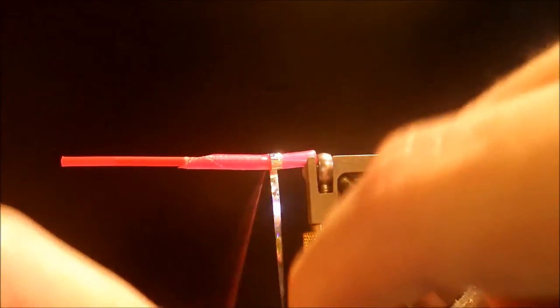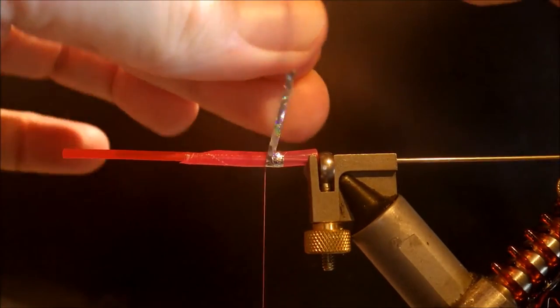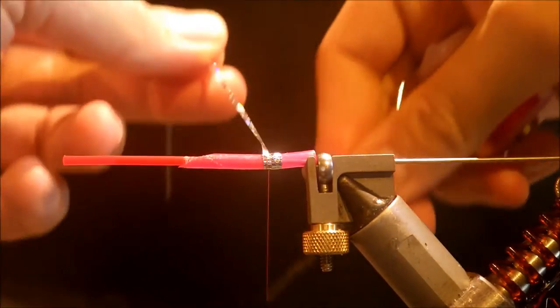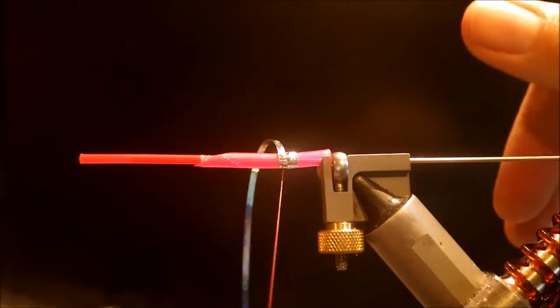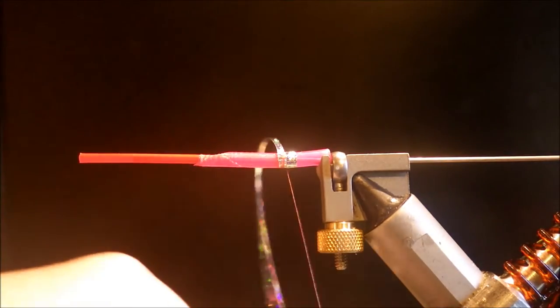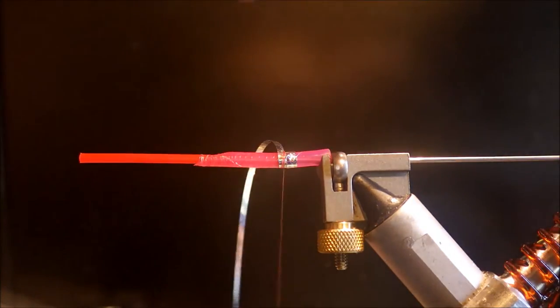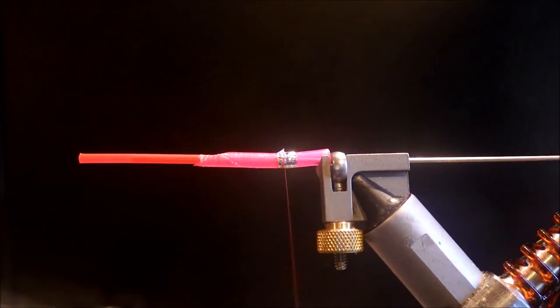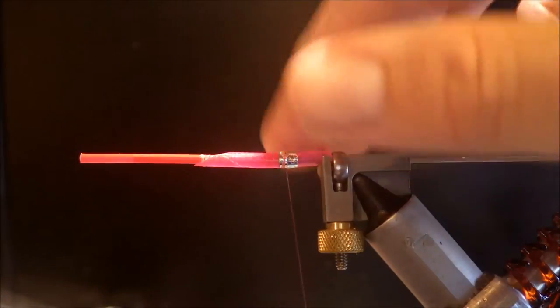Just wind that over the white. A couple turns is plenty. Cross your thread. Tie it off. Take away your excess. Set that aside for later.